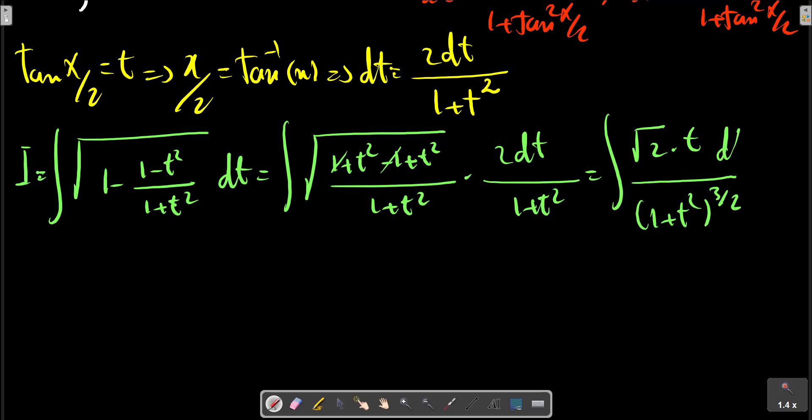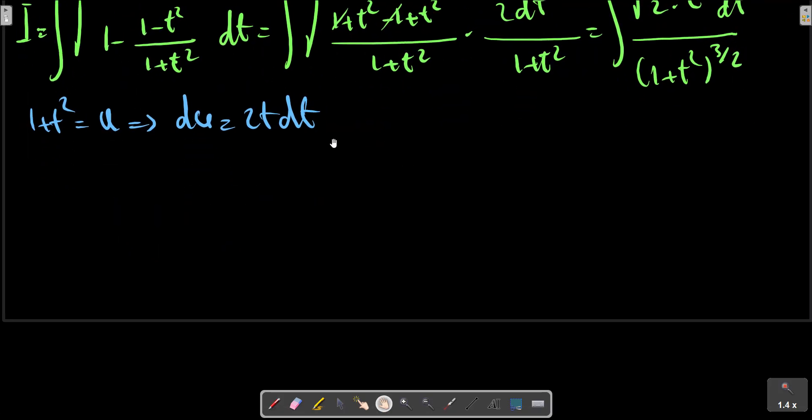dt, with substitution method t, 1 plus t2 equals to u, then u to t dt. There you are.